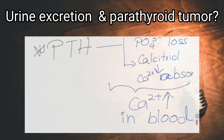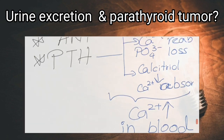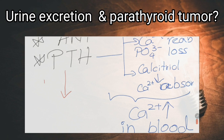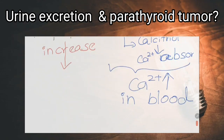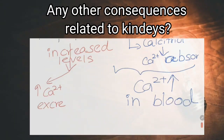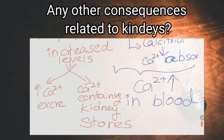What can you say about calcium excretion in urine when there is a functioning parathyroid tumor? Calcium excretion is increased. As parathyroid hormone increases in blood, it causes increased calcium ion levels in blood, so the load of calcium filtered by the glomeruli is increased. This overwhelms the effect of parathyroid hormone on reabsorption of calcium from renal tubules. Any other consequences related to the kidneys in hyperparathyroidism? Yes — the formation of calcium-containing kidney stones.